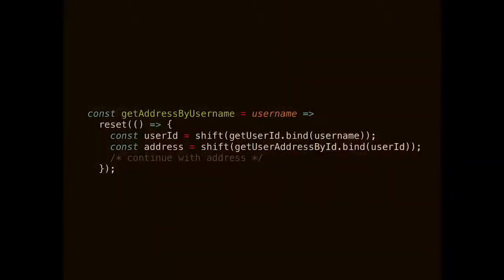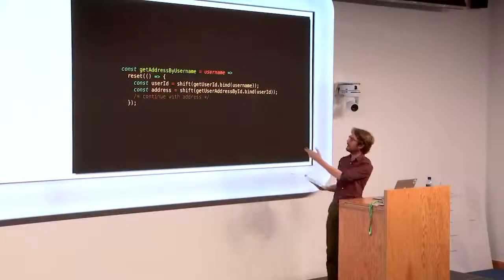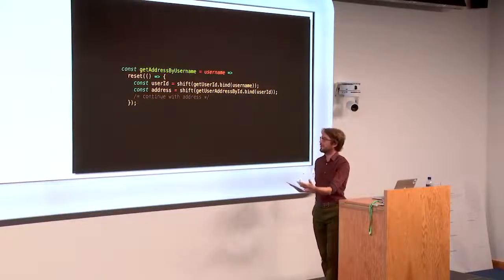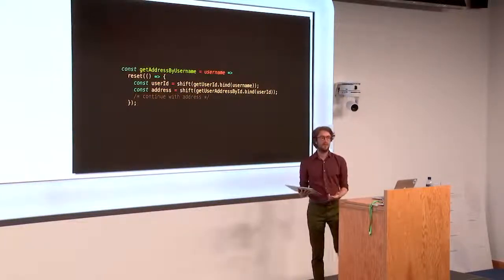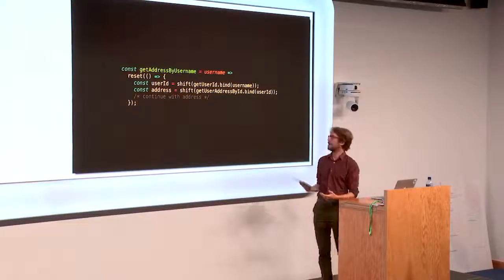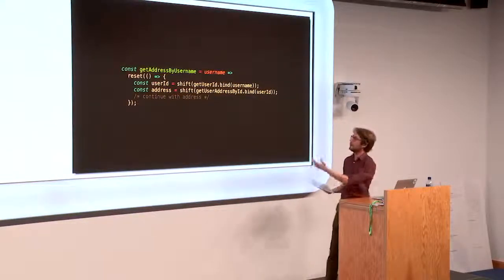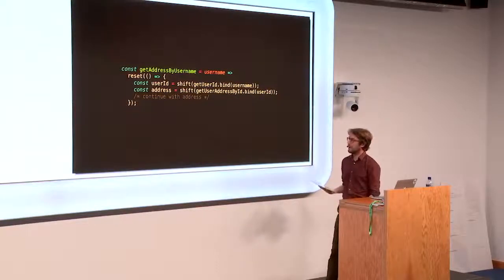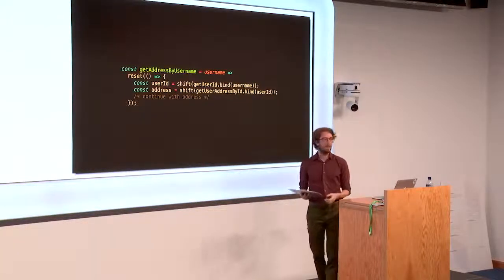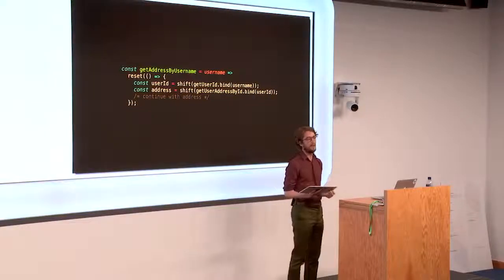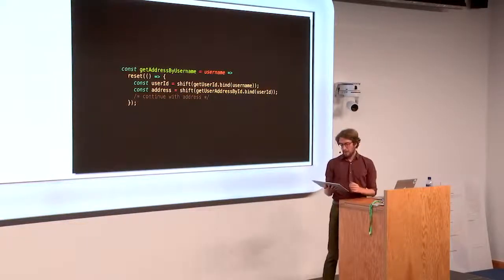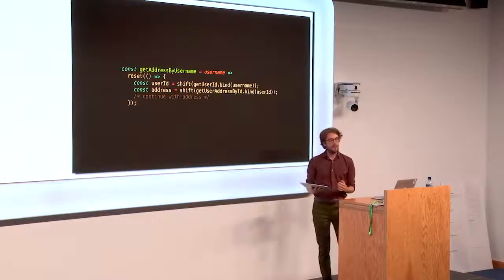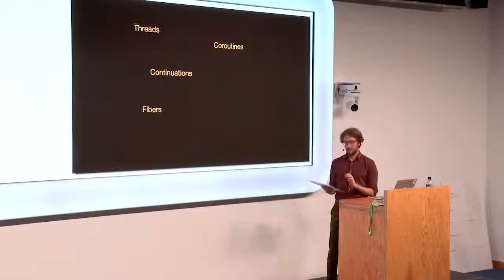So why do we like these? Well, because that continuation returns, we can compose it. And we can do stuff like this. So imagine that we have a function which takes a callback, getUserID. We can just pass that directly to shift. Shift will pass in the continuation as the callback. And whenever that callback gets called, we'll carry on executing this function. And we've done a transformation very similar to what async await and generators allow us to do. And that's not a coincidence, because reset and shift are, in fact, very closely related to generators.